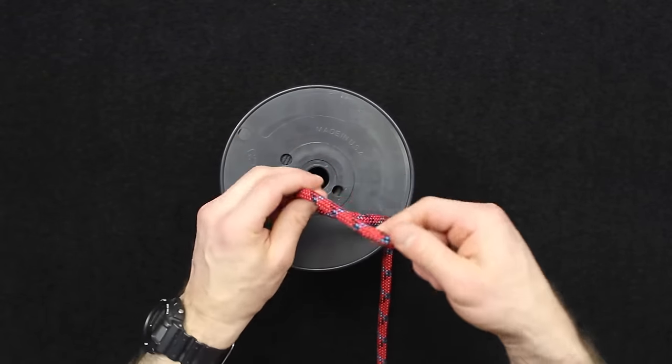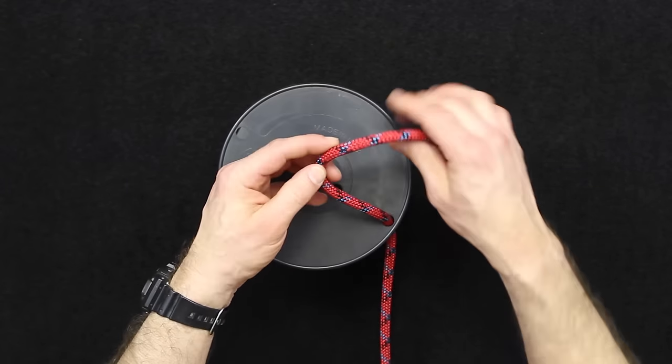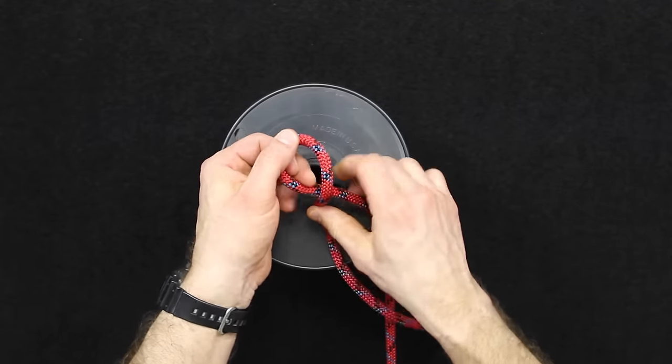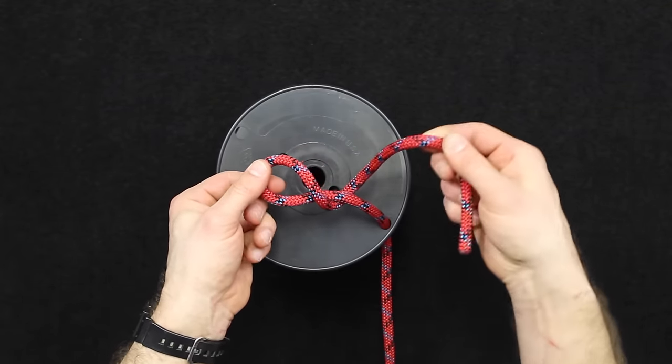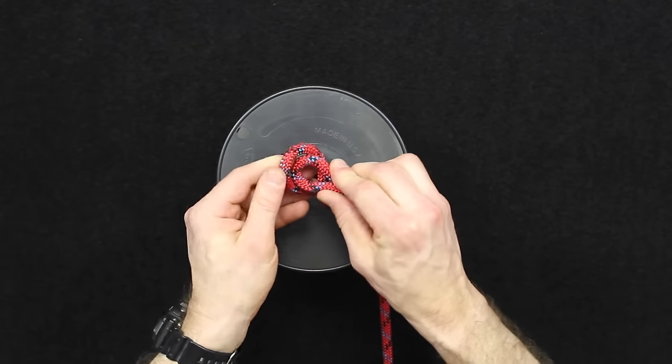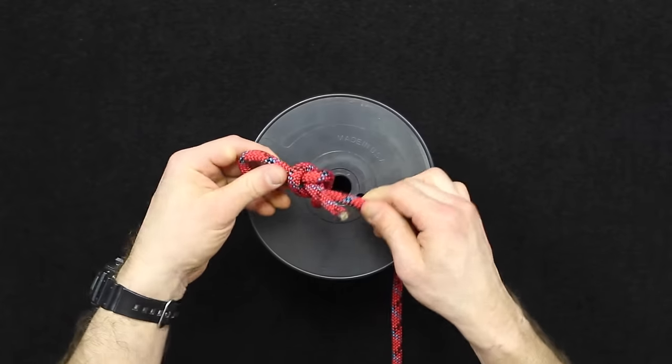A figure eight can also become a little bit hard to untie under load. So a way you can get around that is with a slip figure eight. Instead of coming back through, once you go around the standing part and back through, you can make a bight here and pull that through. Now once you tighten that up,